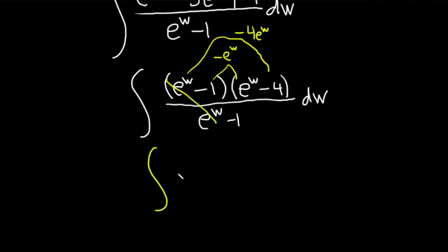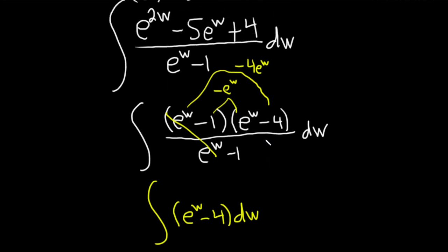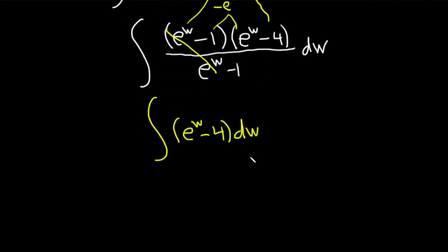So we have the integral, e to the w minus 4, and then dw. And that really cleaned up quite nicely. I haven't done this problem. So when I saw it, I thought, okay.